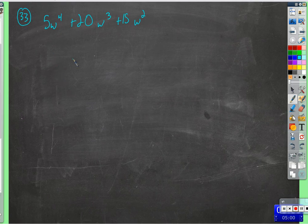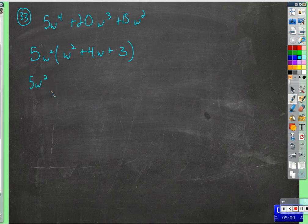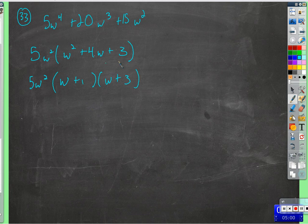Now let's look at all three terms and see if there's anything in common. There's definitely a 5 and a w squared in common. So we factor out 5w squared: 5w squared times w squared is 5w to the 4th, plus 4w — 5w squared times 4w is 20w to the 3rd — plus 3 — 5w squared times 3 is 15w squared. That monomial factor tags along on the outside. Now we can factor the trinomial inside: what multiplies to 3 and adds to 4? That's w plus 1 and w plus 3. Multiplying out gives w squared plus 4w plus 3, which checks out.